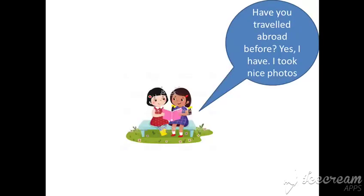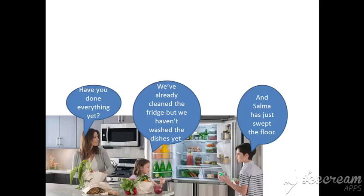Here, two girls are talking. One asks: 'Have you traveled abroad before?' The other answers: 'Yes, I have. I took nice photos.' If the girl hasn't traveled, she can say: 'No, I haven't.' So we answer 'Have you traveled abroad?' with 'Yes, I have' or 'No, I haven't.'